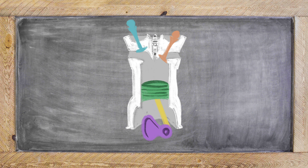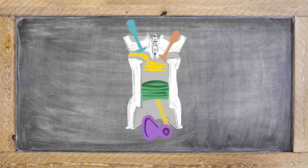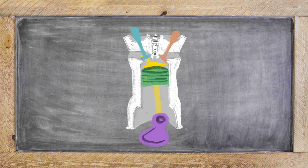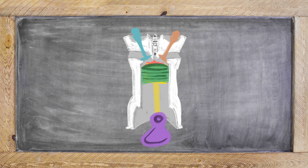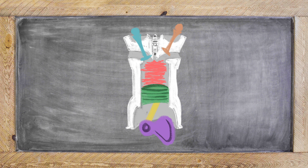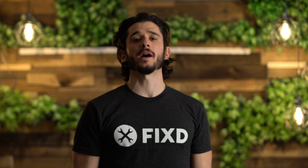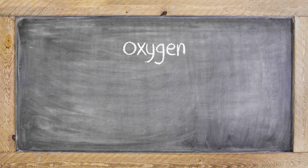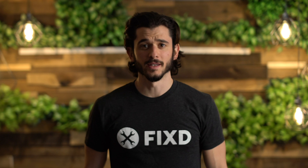Your cylinder intakes the fuel-oxygen mix. The piston compresses that mix. The spark plug ignites the mix to give power. And finally your cylinder is open to release the exhaust. Combustion requires three elements: oxygen, fuel, and spark.